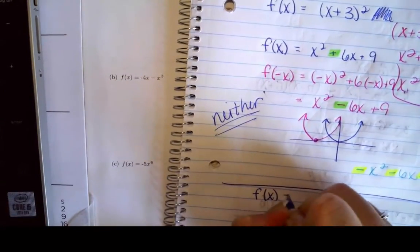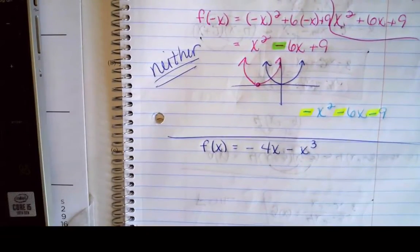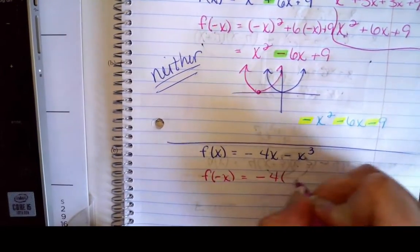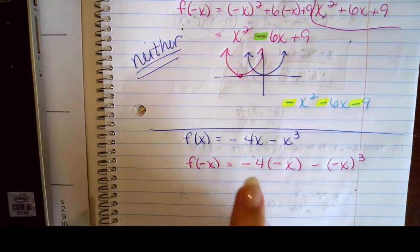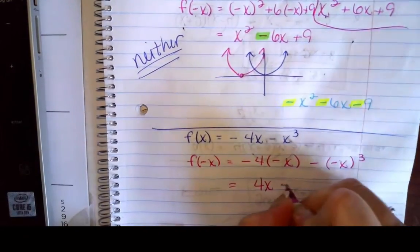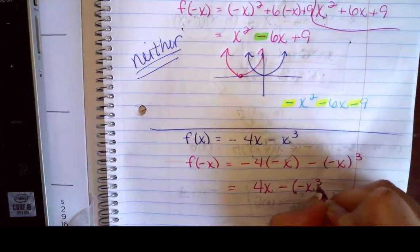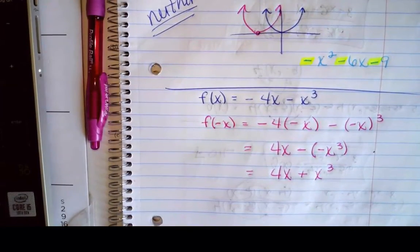Let's try another one: f of x equals negative 4x minus x cubed. My first step is to substitute negative x and see what happens. So I get negative 4 times negative x, minus negative x to the third. Simplifying: negative 4 times negative x is positive 4x, and negative x cubed — well, minus negative x cubed gives me positive x cubed. So I end up with positive 4x plus x cubed.